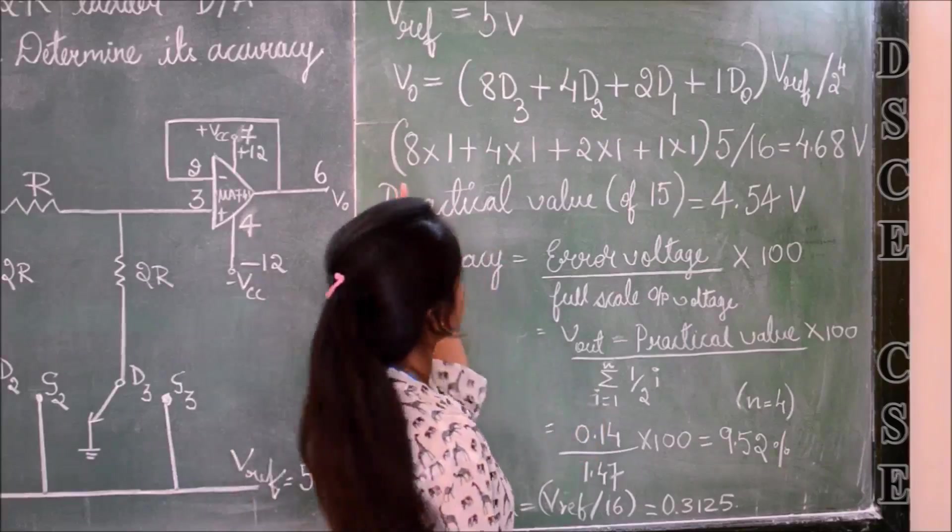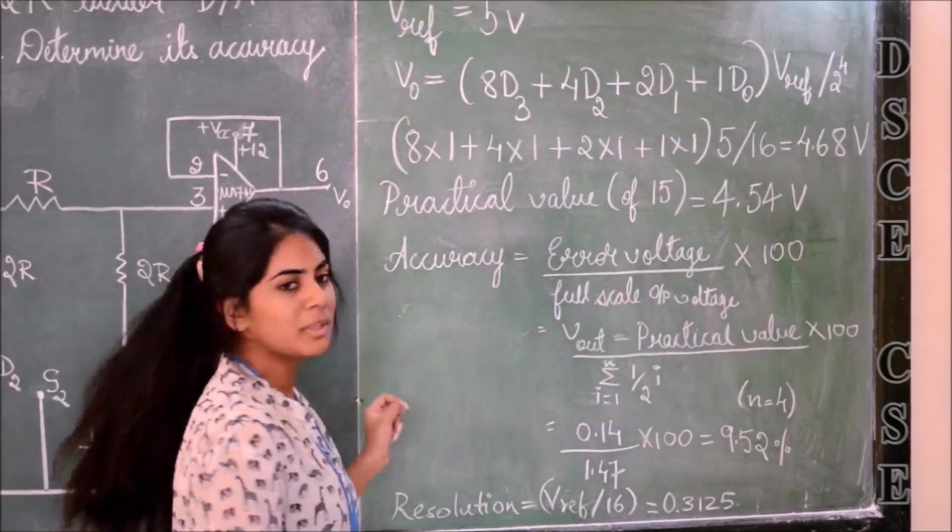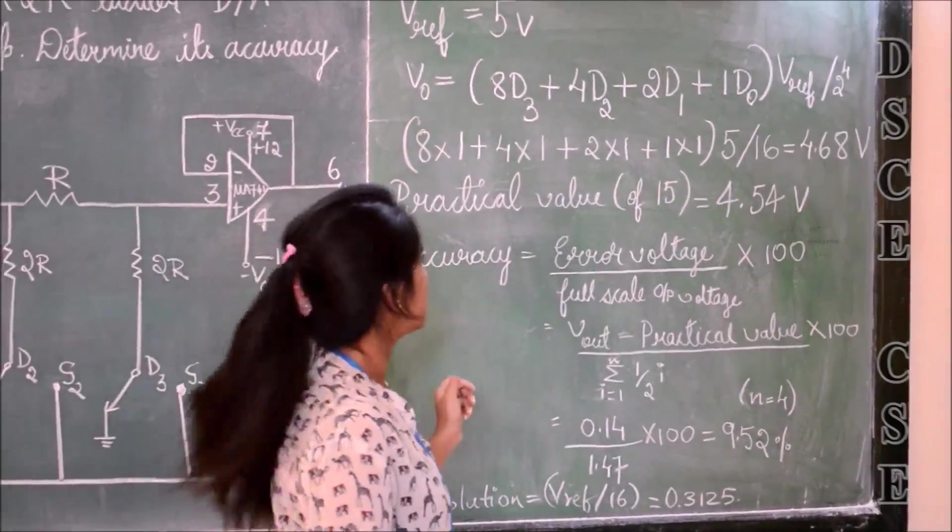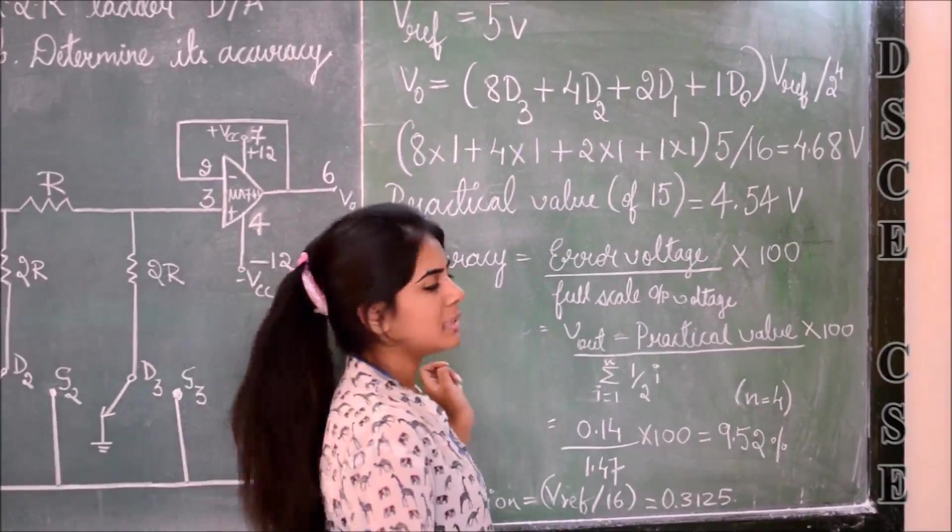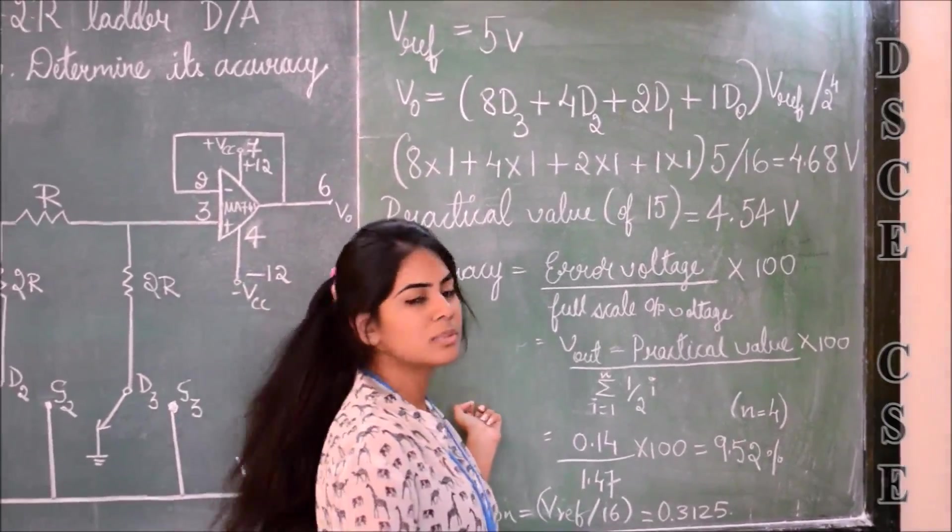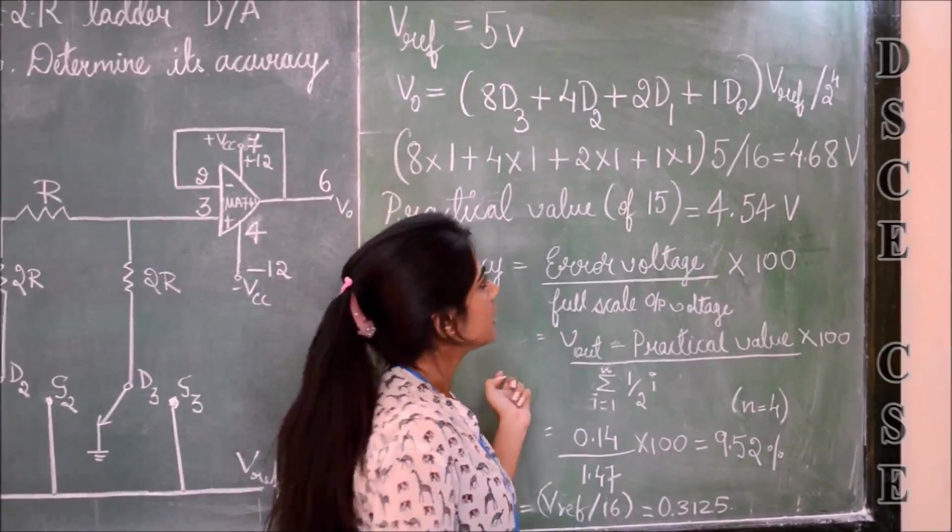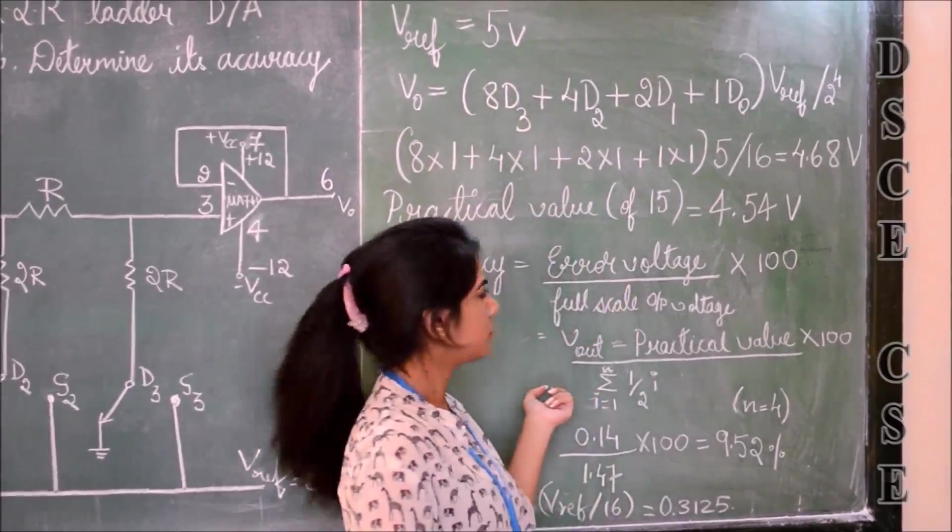Vref equals 5 volts as we know. First we need to calculate the Vout voltage. That is, 8×D3 plus 4×D2 plus 2×D1 plus 1×D0, multiplied by Vref divided by 2 to the power of 4.